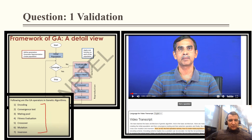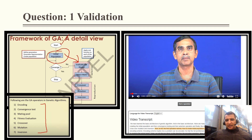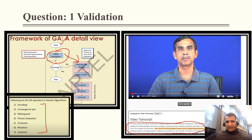The operations conducted in genetic algorithm are: encoding, convergence, mating pool, crossover, mutation, and so on. When we start the genetic algorithm, the first step is initialization of population, which is a type of encoding. After that, we go for fitness evaluation. So fitness evaluation is performed after encoding.